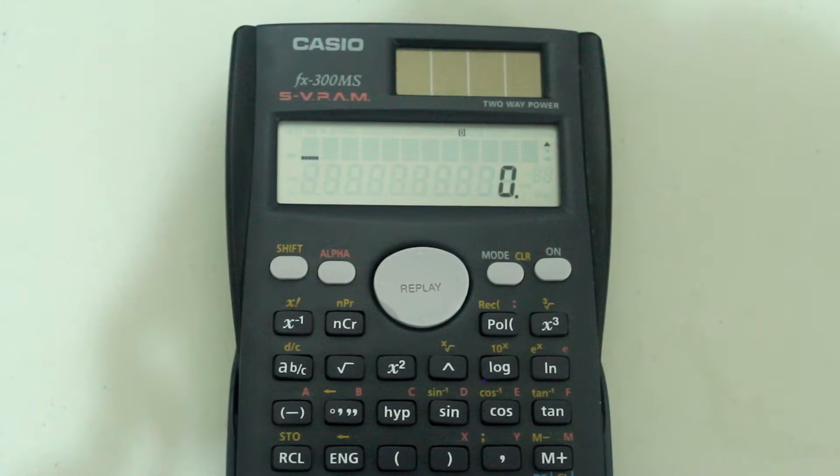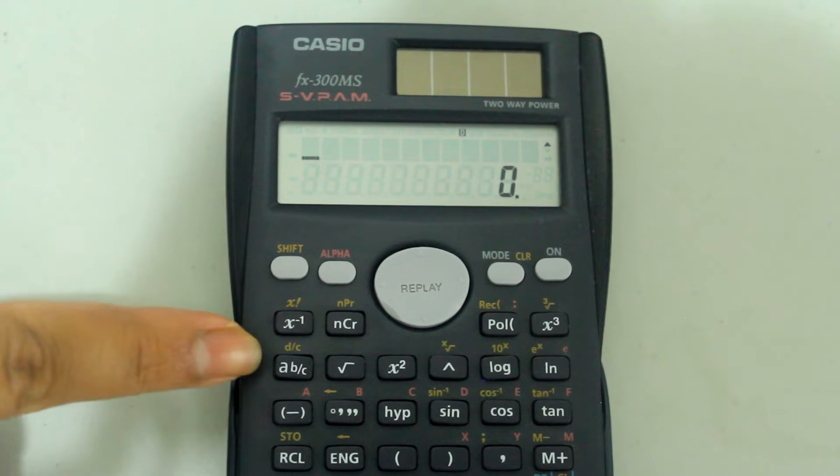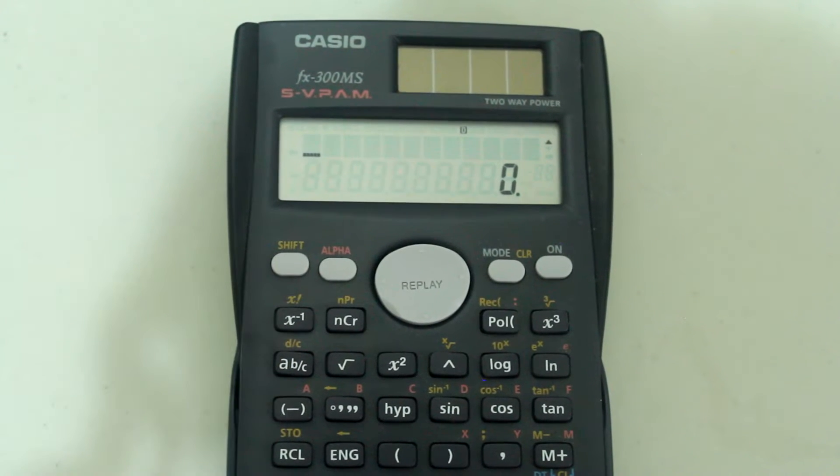If you look on the keypad, you'll notice a button that has A followed by a B over C. That is the fraction button. You can use that to type in improper fractions as well as mixed numbers.